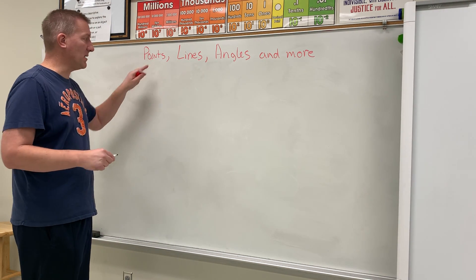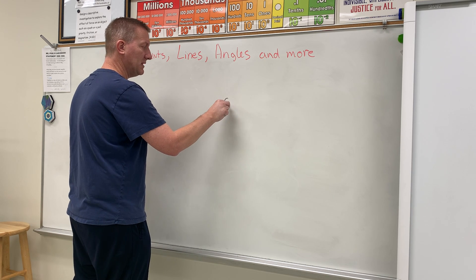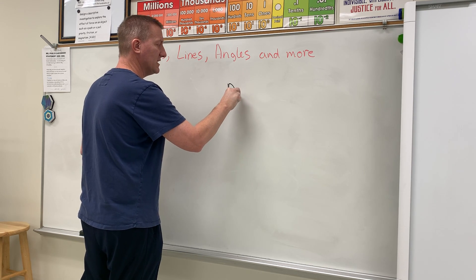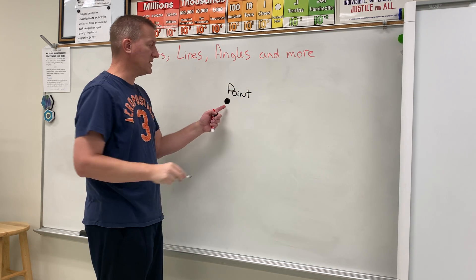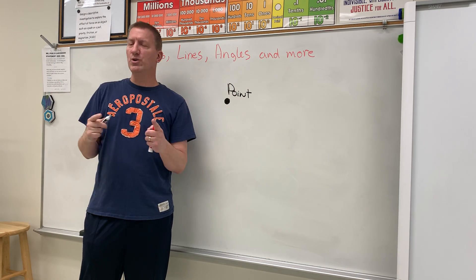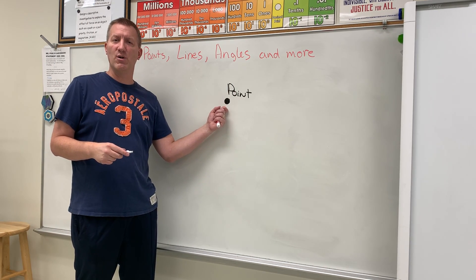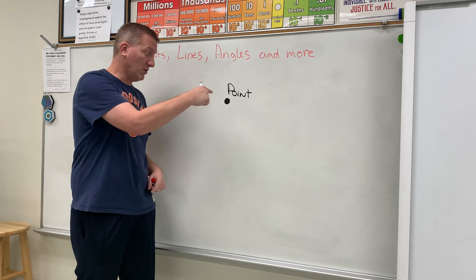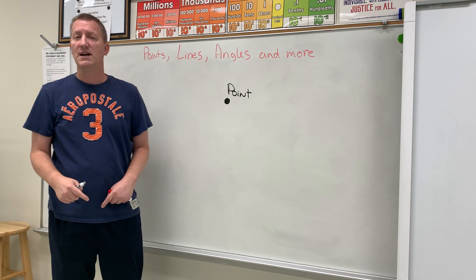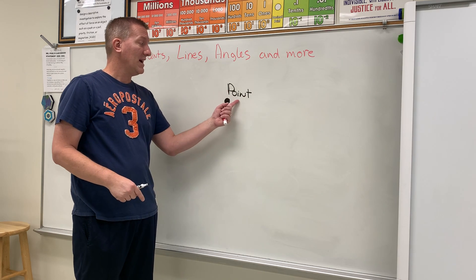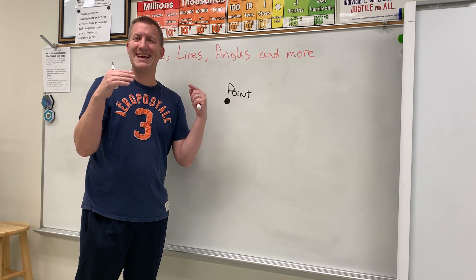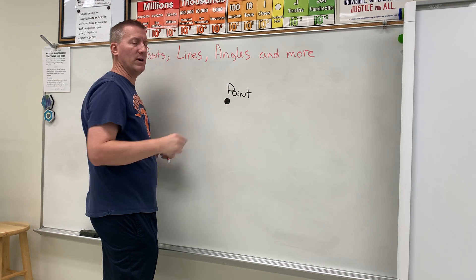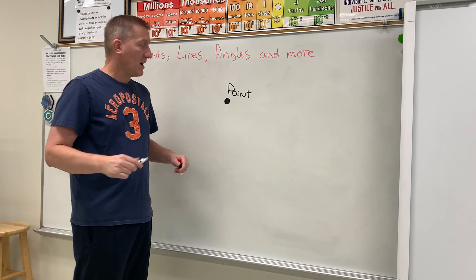So the first thing is a point. A point simply looks like this — it's in an exact location. I could put this point anywhere in the room and you wouldn't know where to go, but if I said stand at the black point, then you would know exactly where to stand right at this mark. So a point shows exact location. That one's pretty easy.